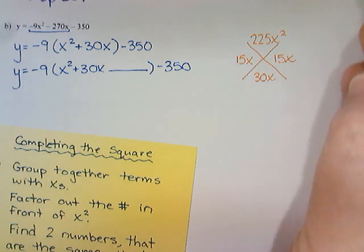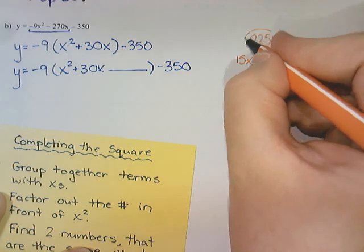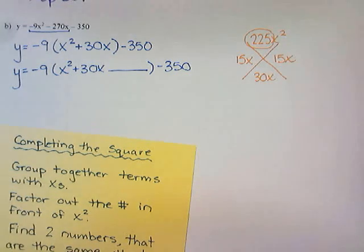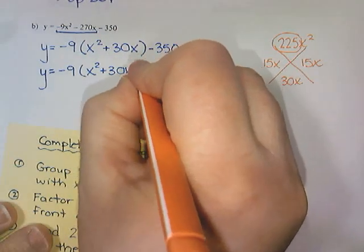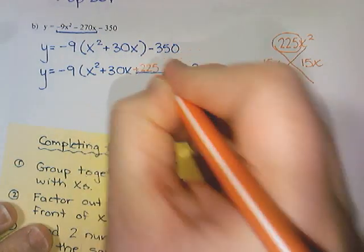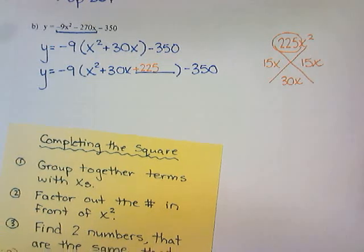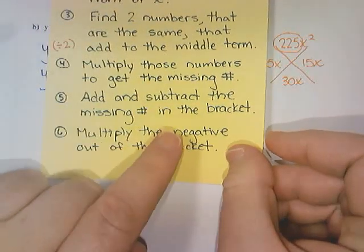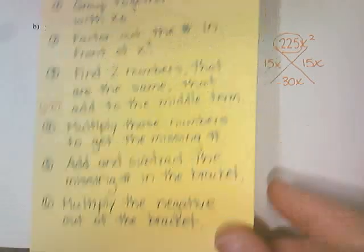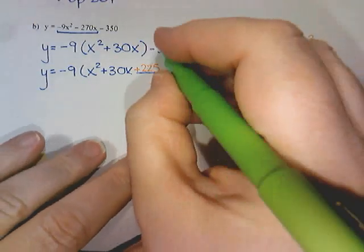So the number we're looking for is 225. I'm going to add 225. But I can't just randomly add a number because that changes my equation. So it says add and subtract the missing number in the bracket. We're going to add 225 and then also subtract 225, because otherwise it's not the same parabola anymore.